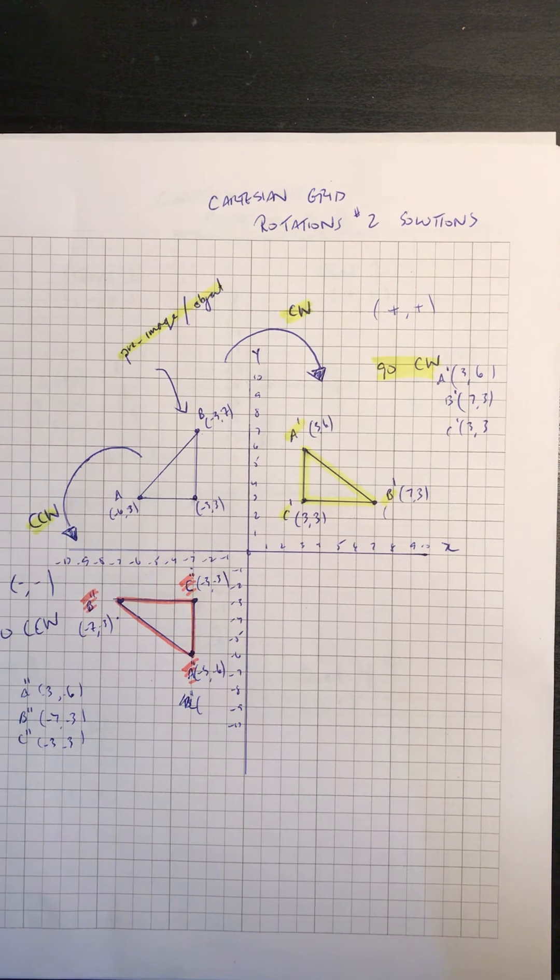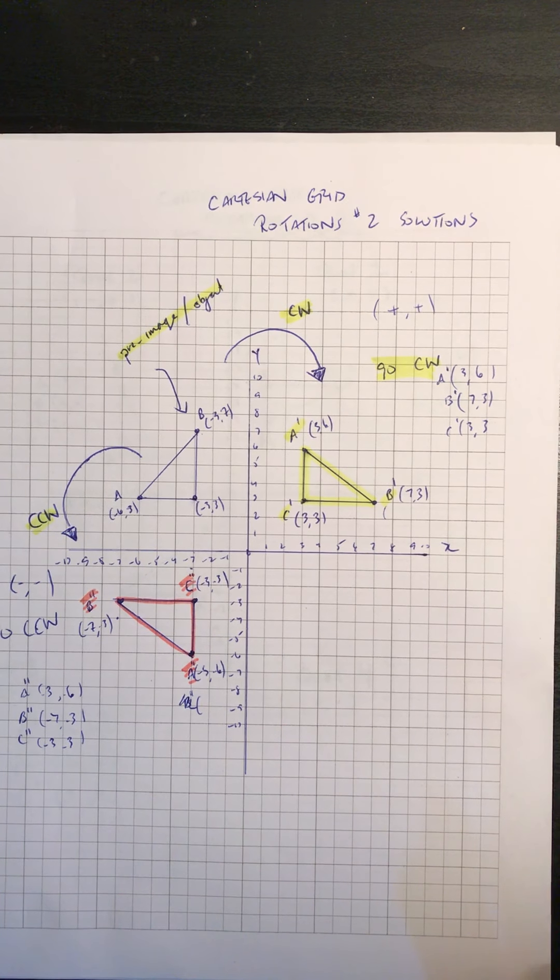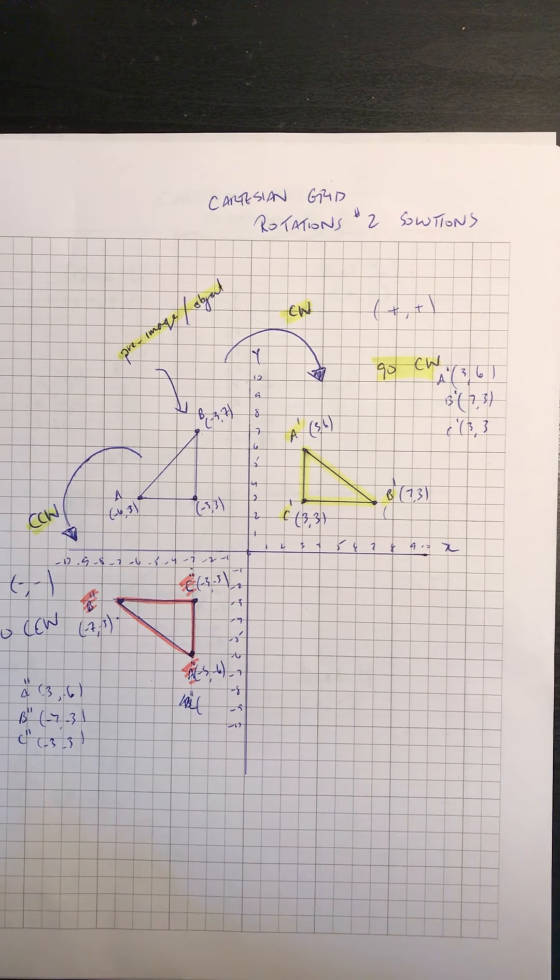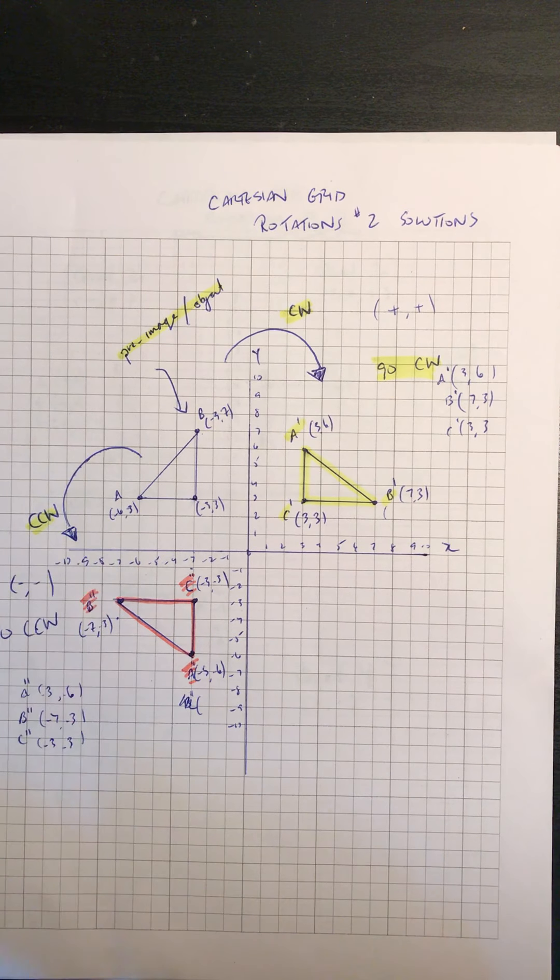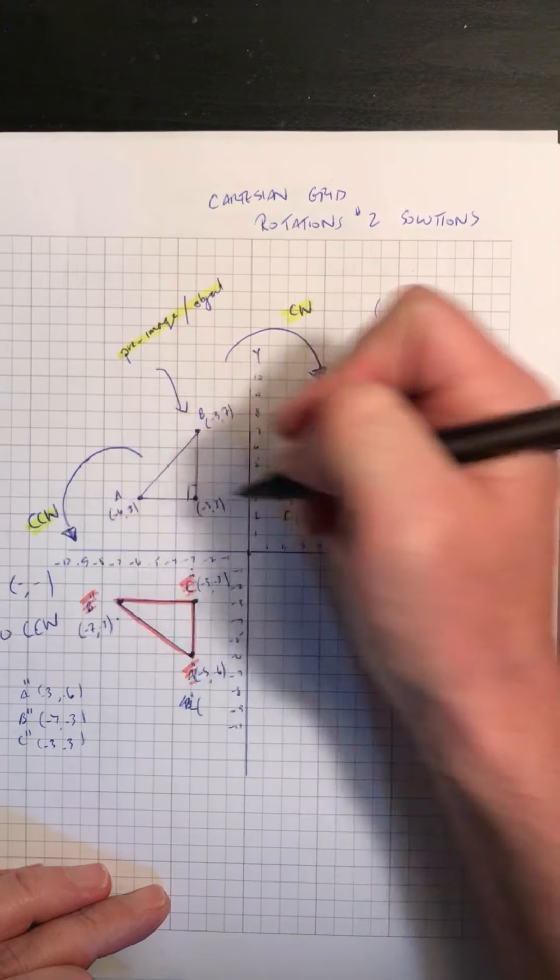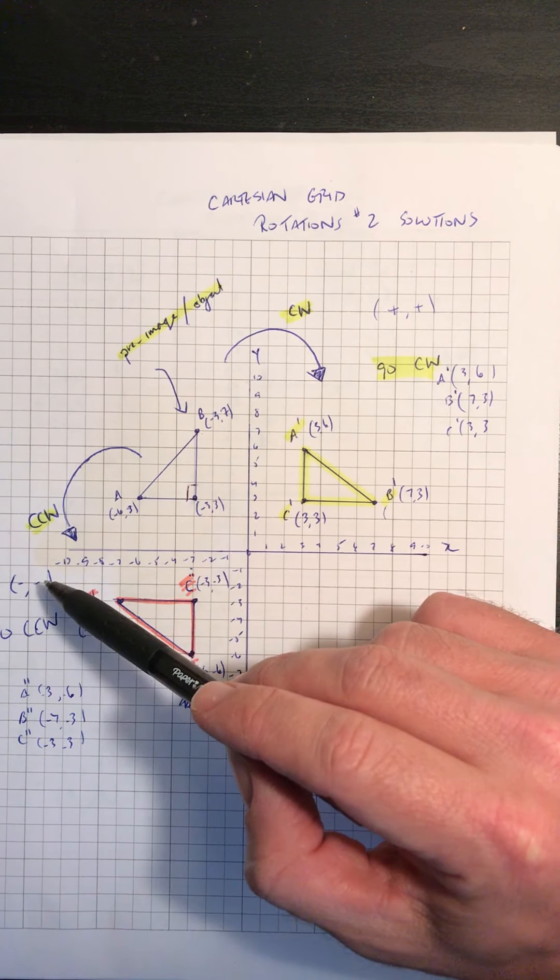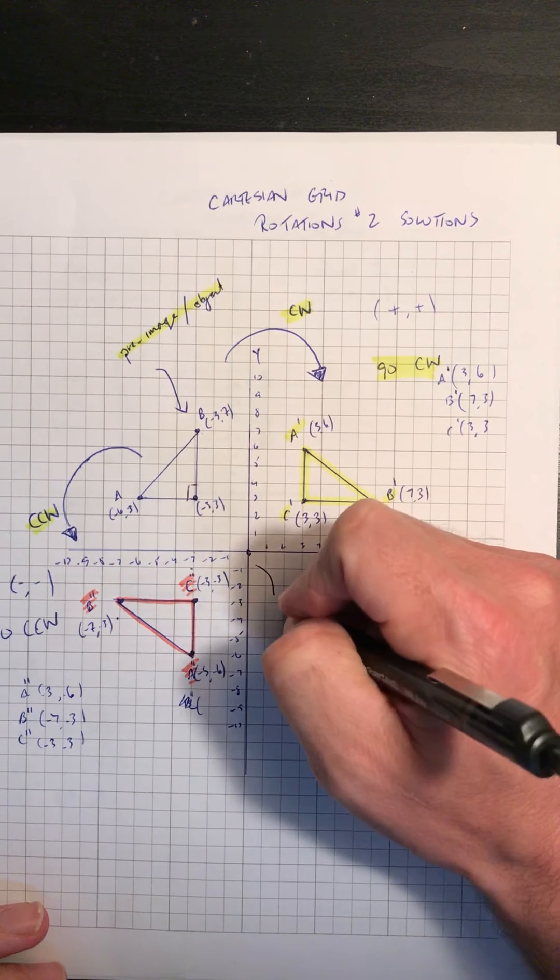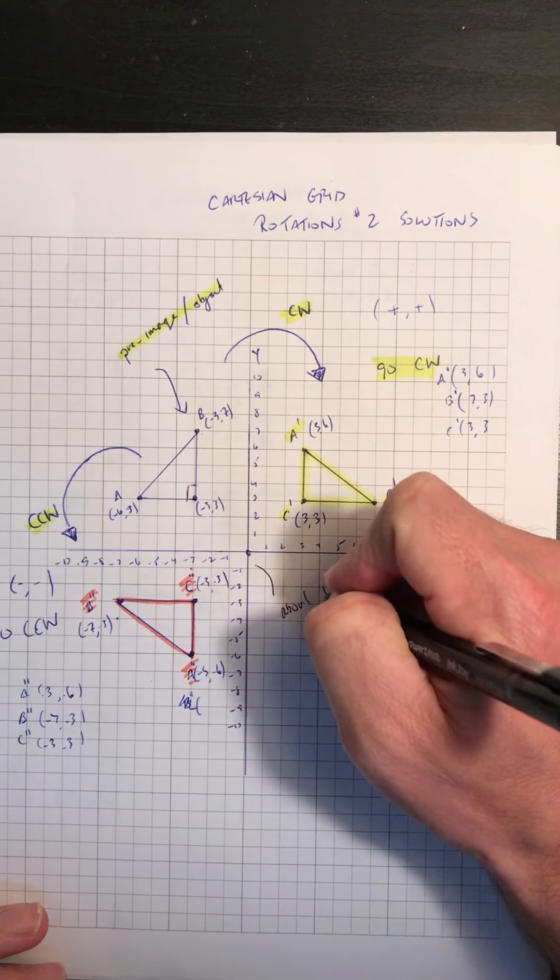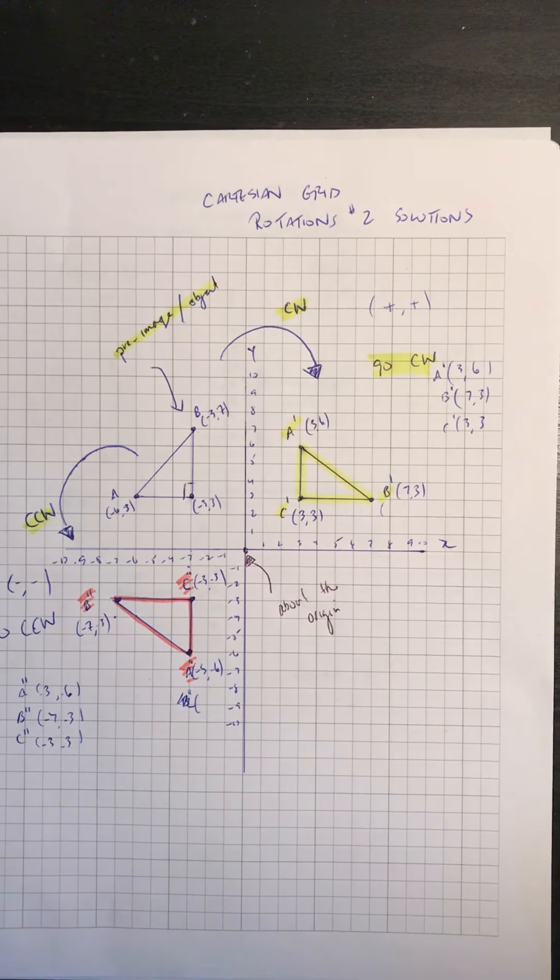Hopefully you're understanding how we're doing the rotations here. There's a lot on the page. We'll take a couple minutes to figure out what's going on here. So here's our pre-image. These were the coordinates that were given. So this is the right angle triangle that we were going to be rotating, clockwise rotation and a counterclockwise rotation about the origin. There's our origin right there. The origin refers to that right there.